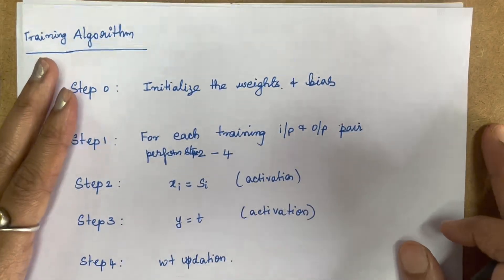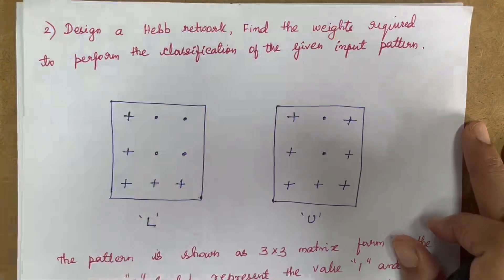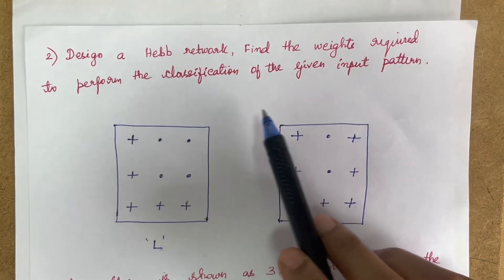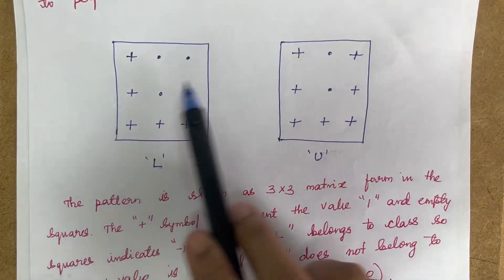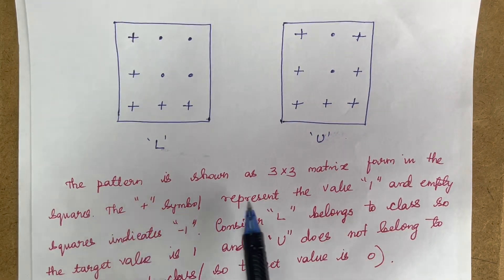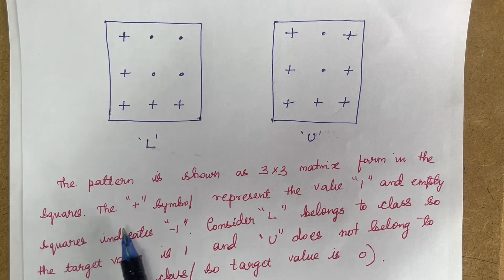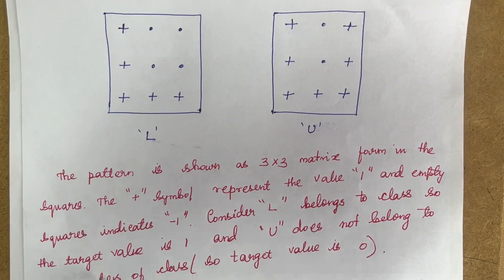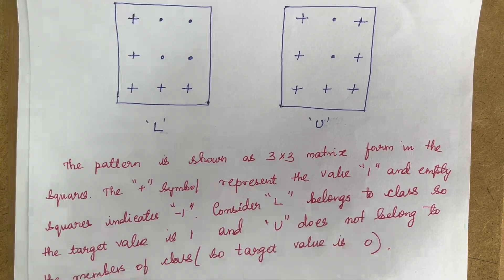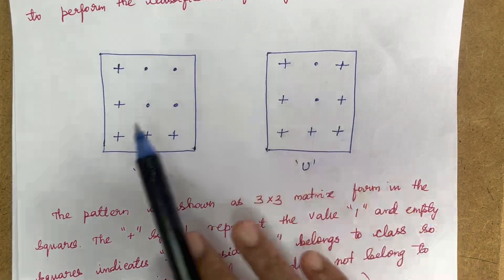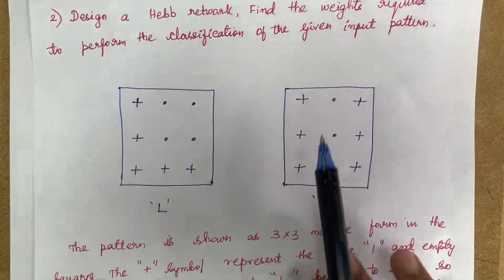This is the training algorithm for the HEP network. In this problem they have given: design a HEP network and find the weights required to perform the classification of the given input patterns. Two patterns are given, represented by plus and dot symbols in a 3×3 matrix. Plus symbols represent the value 1 and empty squares represent −1. L belongs to the class so the target value is 1, and U does not belong so the target value is 0 (or −1).